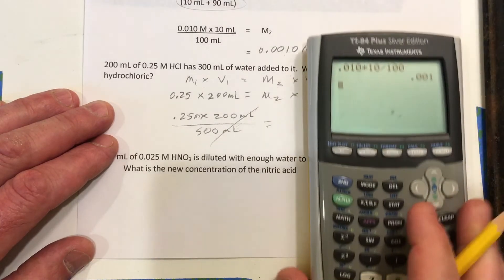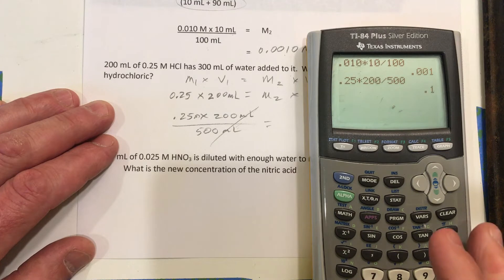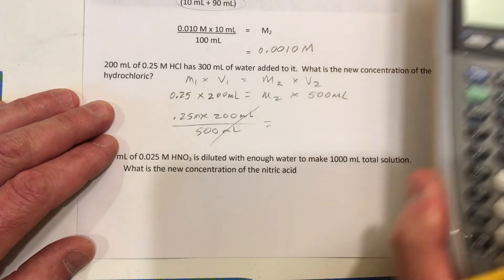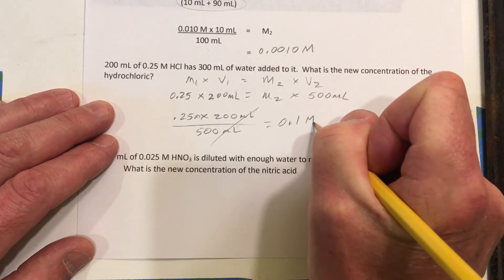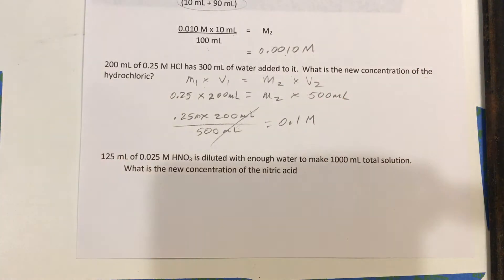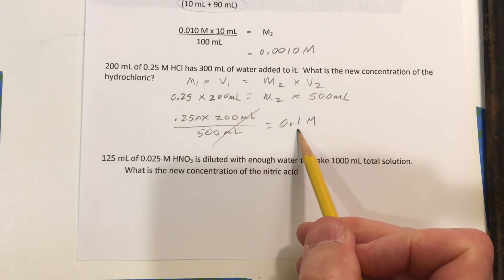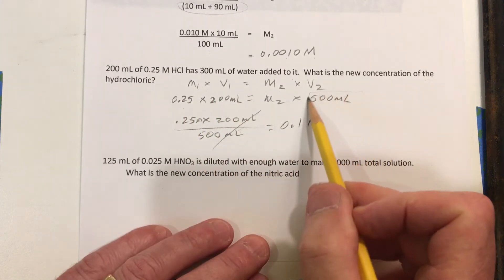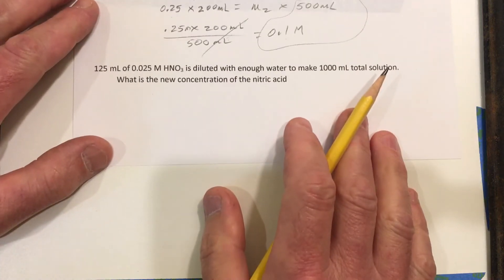0.25 times 200 divided by 500. And that gives me 0.1. So I ended up with 0.1 molar as the concentration. So I started at 0.25 and ended up at 0.1. But now I have 500 milliliters of this 0.1.